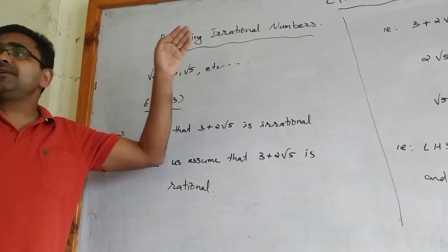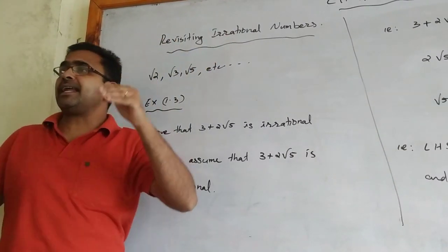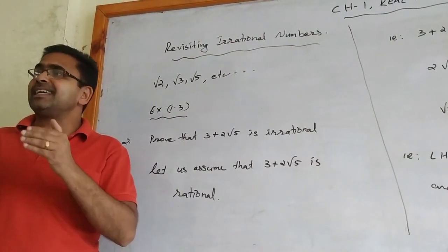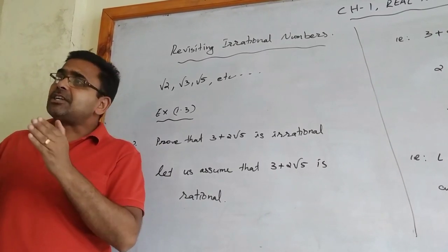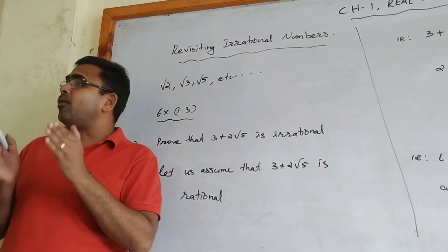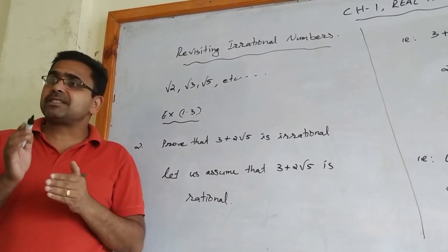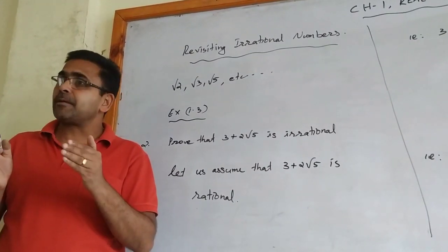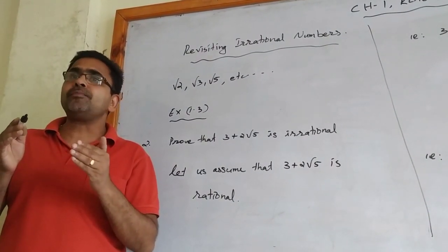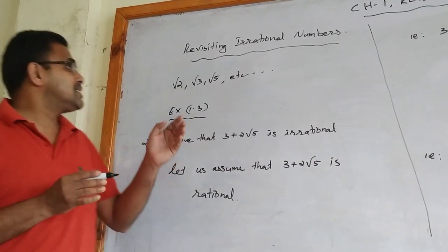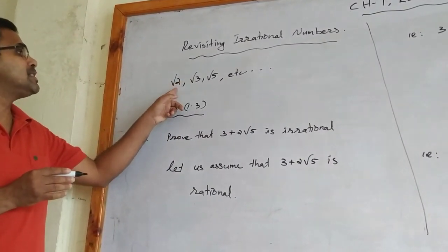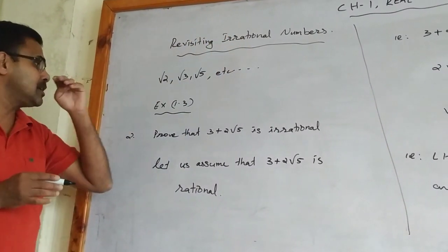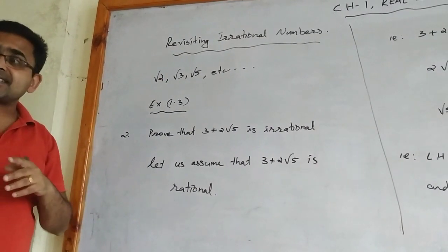Revisiting irrational numbers: we are again reviewing what irrational numbers are. In class 9 we studied rational and irrational numbers. A rational number is one which can be expressed in the form P/Q — with a numerator and denominator. Numbers which cannot be expressed in that form are irrational numbers. Examples of irrational numbers are √2, √3, √5, etc. Now we are coming to exercise 1.3, question 2.